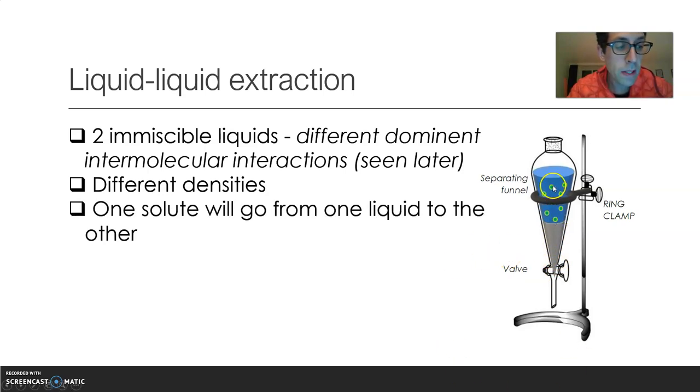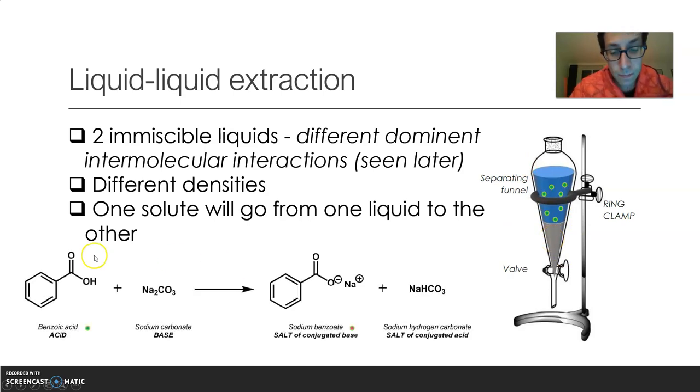What we're gonna see is that the solute, the benzoic acid, will turn to a more soluble substance and will change the layer. It will go from the blue layer to the gray layer. And by doing so, the benzoic acid, the green dots, we're gonna add sodium carbonate, it's not shown here, and the benzoic acid will turn to fuchsia dots.